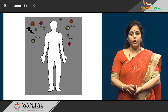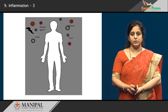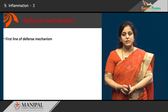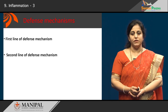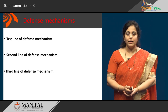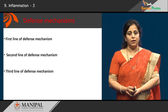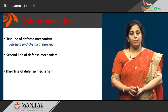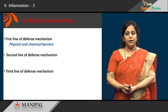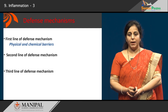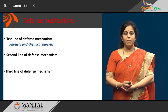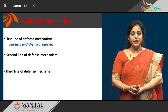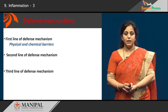Now how is our body going to tackle damage by these injurious agents? We have what is called the defense mechanism. We have the first line, the second line, and the third line of defense mechanism. The first line of defense mechanism includes various physical and chemical barriers. For example, the skin that covers the body is a physical barrier that prevents microorganisms from gaining entry. The saliva and tears contain enzymes which serve as chemical barriers.